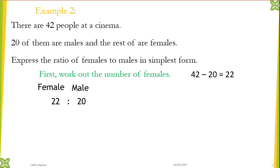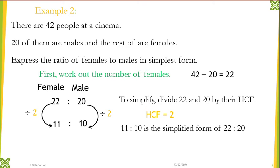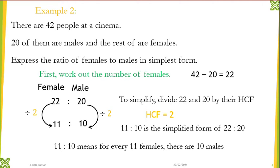So in doing the ratio I'm going to have 22 to 20. The highest common factor of 22 and 20 is 2 — that's the biggest number to divide both. When you divide each by 2 you're left with 11 is to 10. So 11 is to 10 is the simplified form of 22 is to 20, which means for every 11 females there are 10 males.